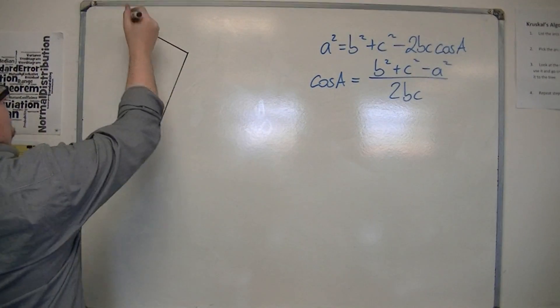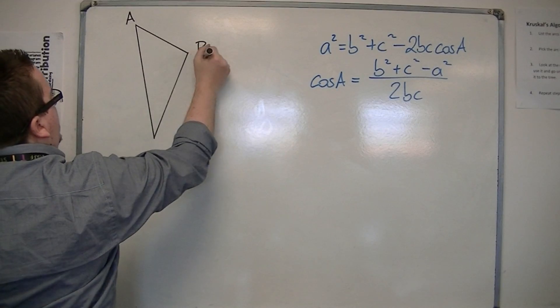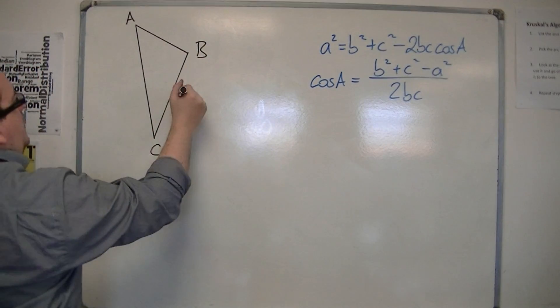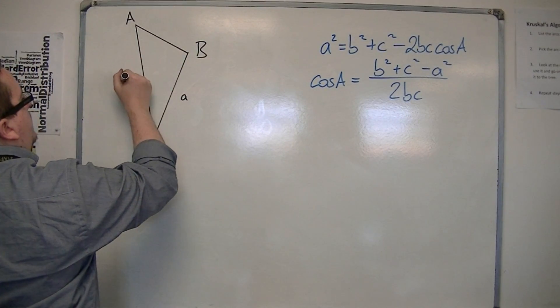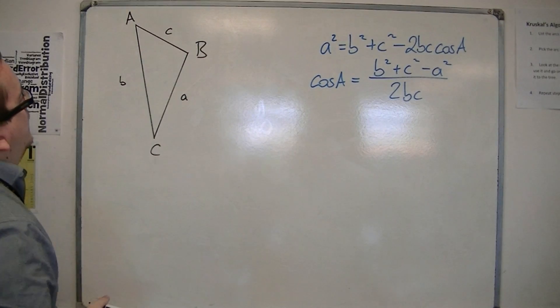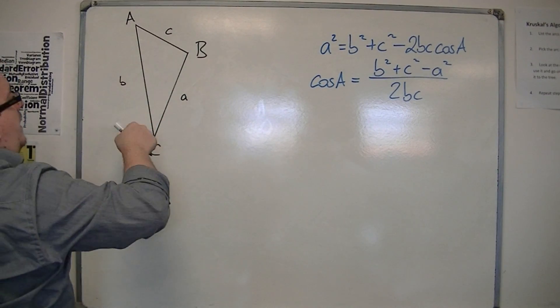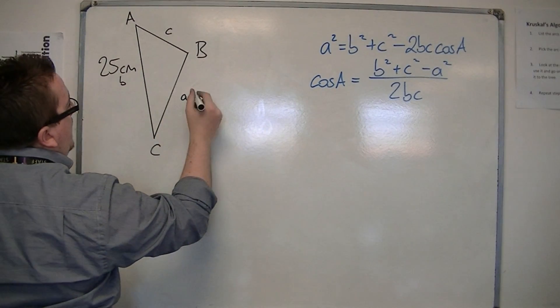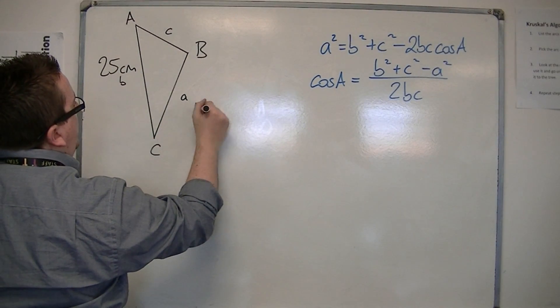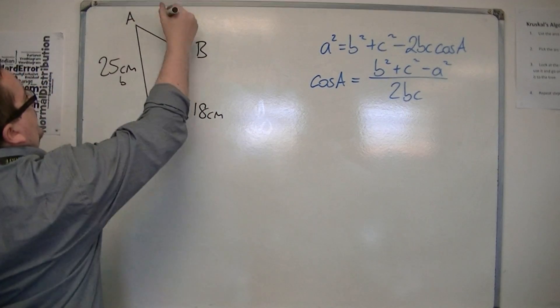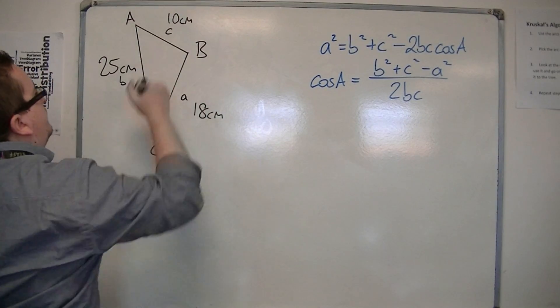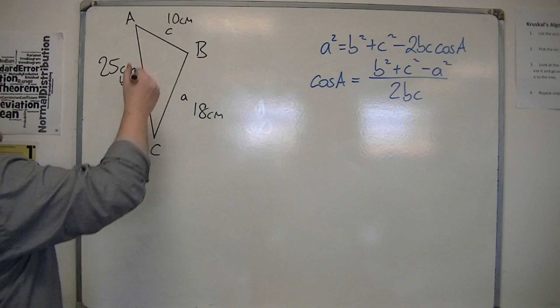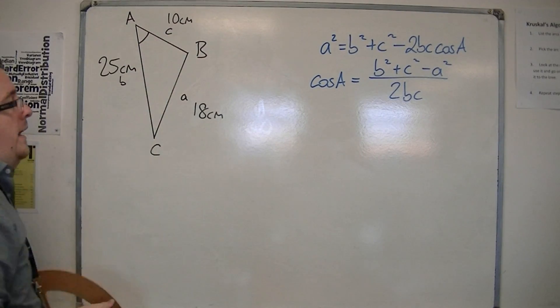Right. So let's say that this is angle A, B and C. So that's side a, that's side b and that's side c. So let's say that length a is 25 cm, b can be 18 cm, and c can be 10 cm. And let's say I want to find this angle here, angle A.